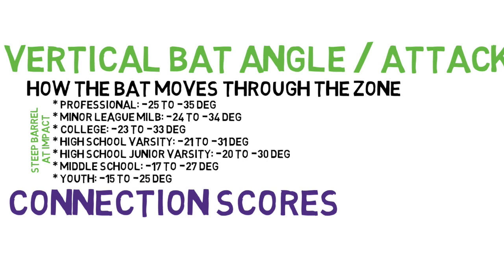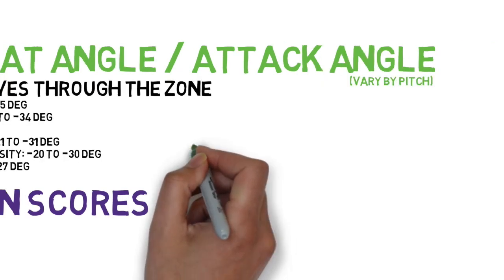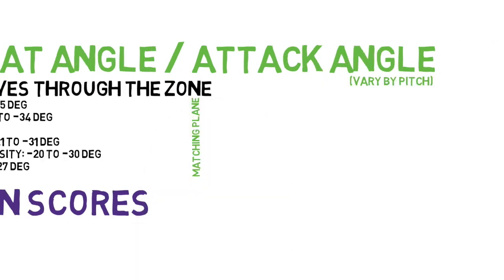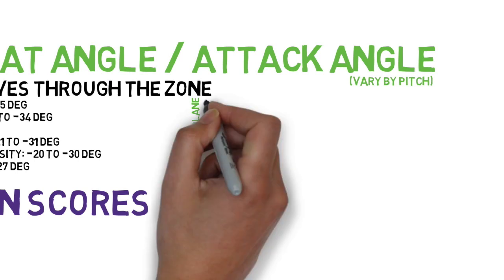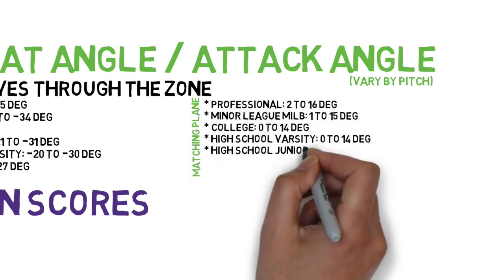Your vertical bat angle is going to be how steep your barrel is at impact, while your attack angle is going to be how well you match the plane of the incoming pitch.